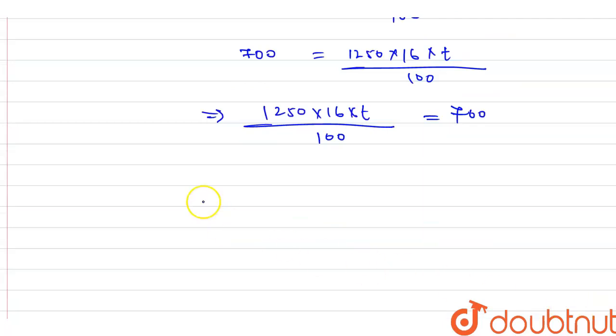Now what we will do? We will do from here cross multiplication. So we can write it t equal to 700 into 100 upon 1250 into 16. From here, what we can do now?